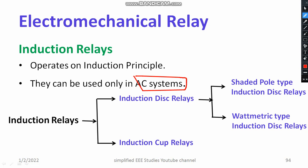Induction relay can be broadly divided into two types: induction disc type relay and induction cup relay. Induction disc relay is further divided into two: shaded pole type induction disc relay and wattmetric type induction disc relay. You need to know how an energy meter operates — the importance of a braking magnet, importance of the aluminium disc, interaction of two fluxes, and the phenomenon of creeping. If you know this background, it is very easy to understand induction relay.